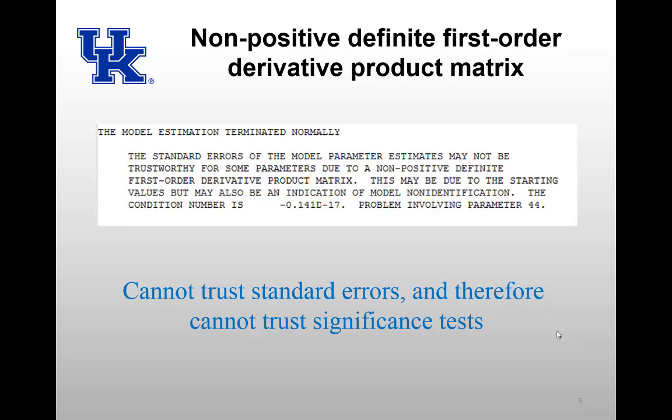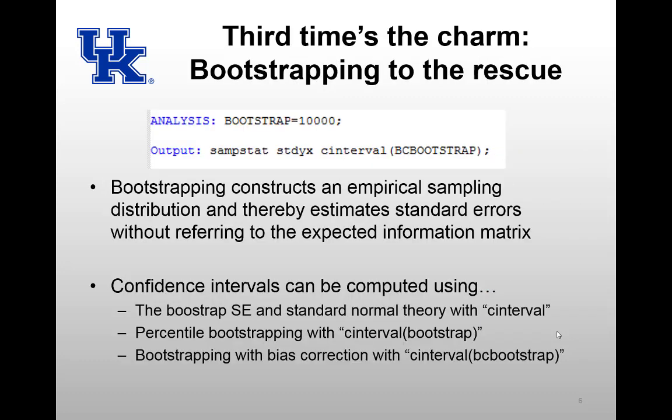Now they can freely co-vary. This specifies a model that Mplus will analyze and give us an error. The problem is that the first order derivative product matrix is non-positive definite. This means our standard errors will not be trustworthy, so we aren't going to look at the model results for that. We have to fix this problem of untrustworthy standard errors first.